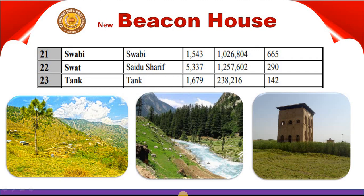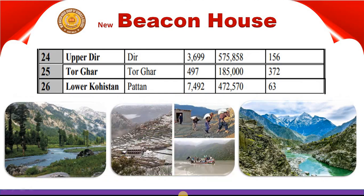The twenty-third district has its headquarter in Tank. It has an area of 1,679 km², a population of 238,216, and a density of 142 people per km². The twenty-fourth district has an area of 3,675 km² and a population of 575,858, with a density of 156 people per km².